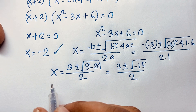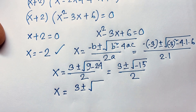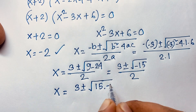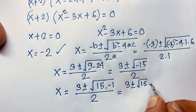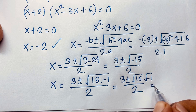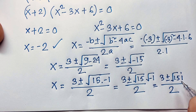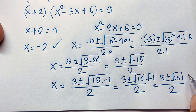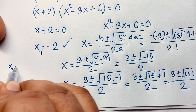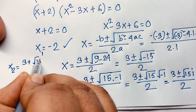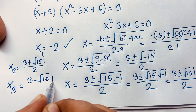So x equals 3 plus or minus square root of negative 15, over 2. We can write square root of negative 15 as square root of 15 times square root of negative 1, which equals square root of 15 times i. So x equals 3 plus or minus square root of 15 times i, over 2. Therefore x₂ equals 3 plus square root of 15 i, over 2, and x₃ equals 3 minus square root of 15 i, over 2.